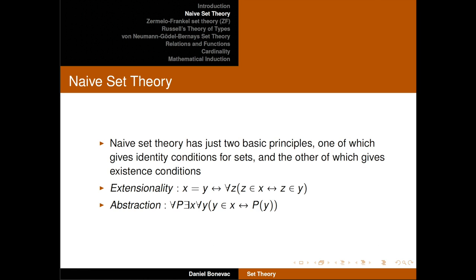The two basic principles: one gives identity conditions for sets, the other gives existence conditions. The first is extensionality. It says that x is identical to y if and only if, for any z, z belongs to x if and only if z belongs to y. In other words, x and y are the same set if they have exactly the same members — something belongs to one of them if and only if it belongs to the other. Sets are identified by their members.